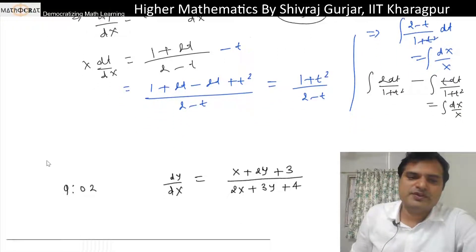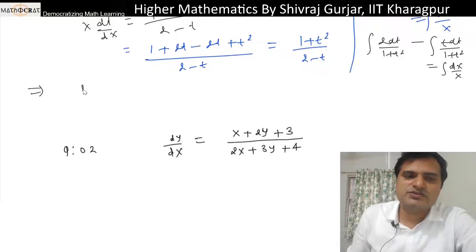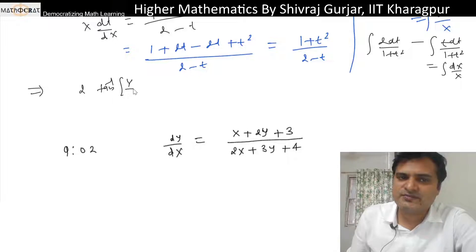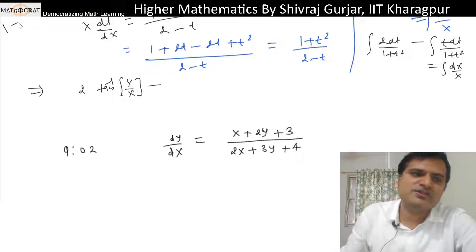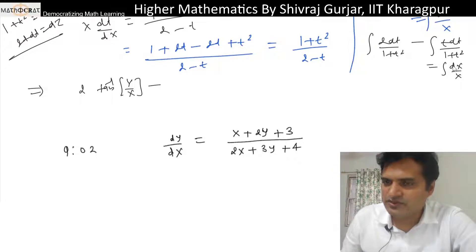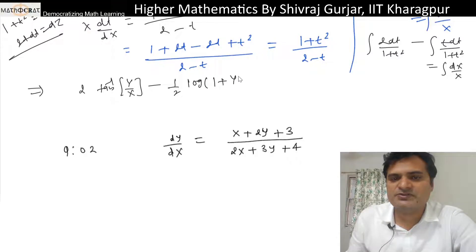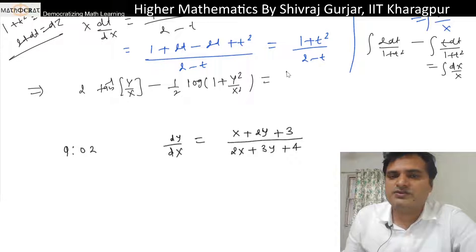The second integral becomes -(1/2) log Z = -(1/2) log(1 + T²), and T² = Y²/X². So we get: 2·tan⁻¹(Y/X) - (1/2)·log(1 + Y²/X²) = log X + log C.